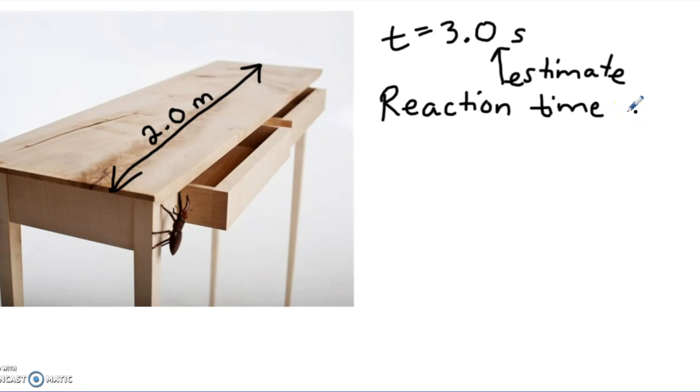So now that we have the length of the table and the time that it takes the bug to cross the table, how would you report that bug's speed?